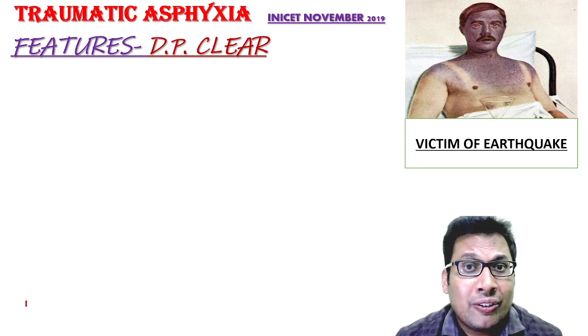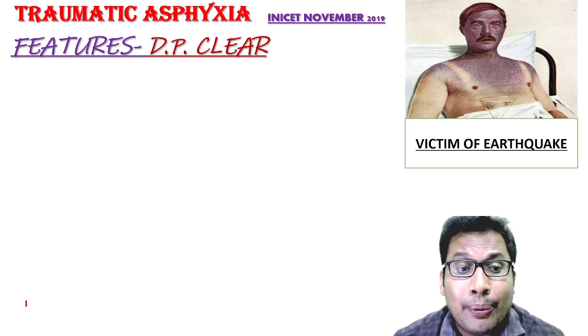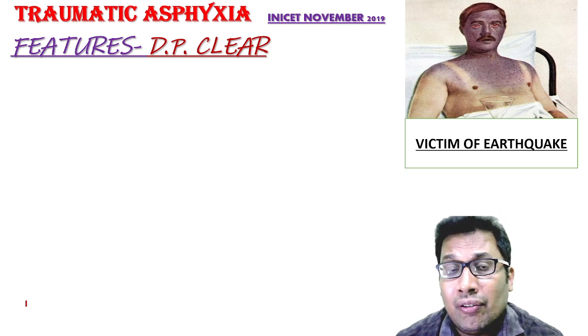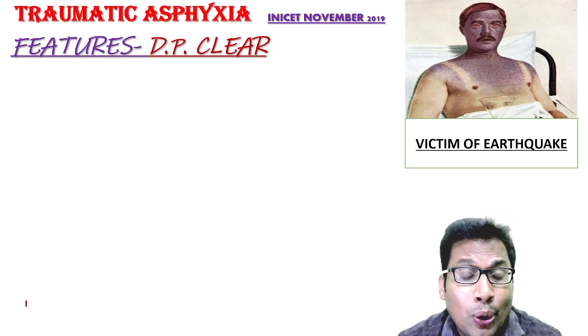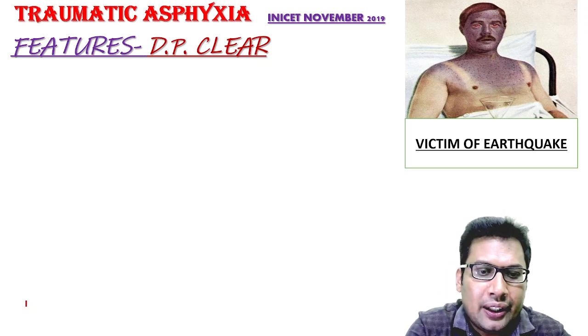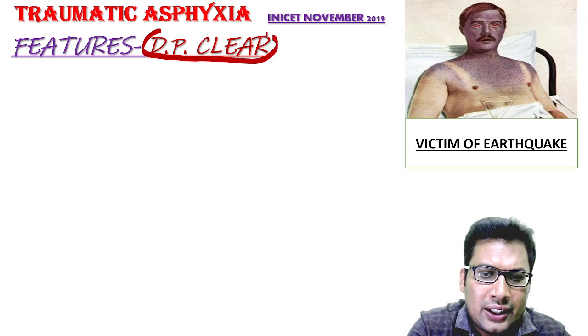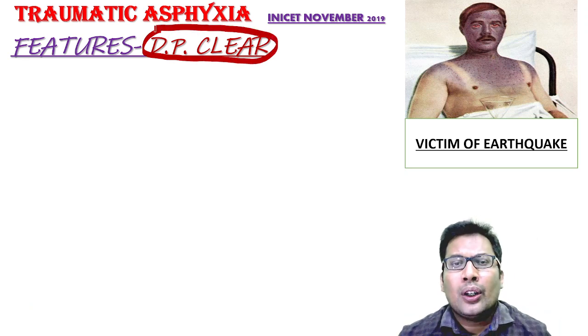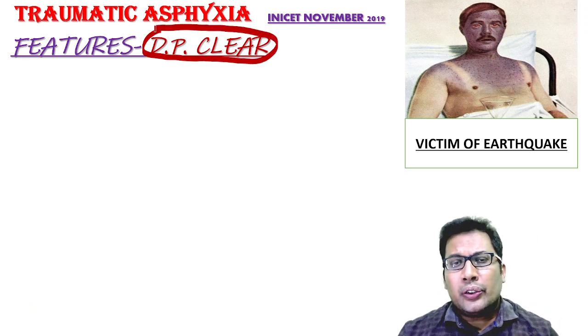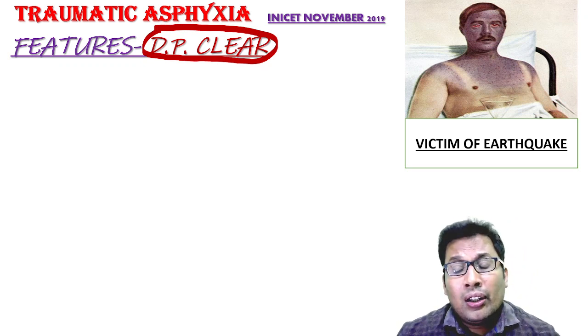In brief, you can remember traumatic asphyxia with the help of a mnemonic known as DP-CLEAR. So you can see there is a picture of traumatic asphyxia, and you can see three important features.